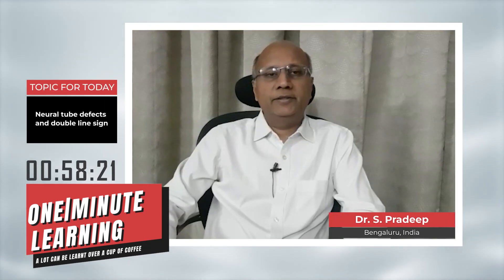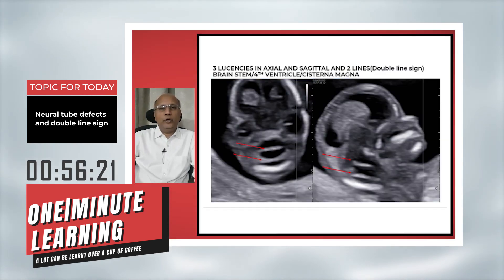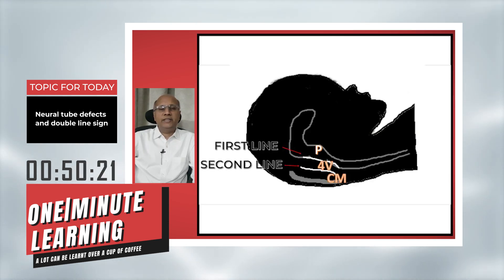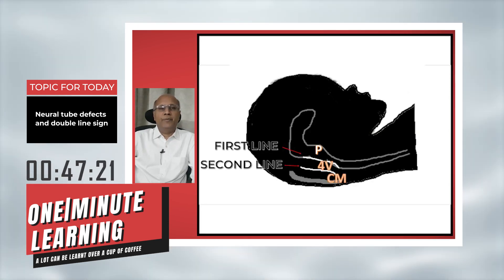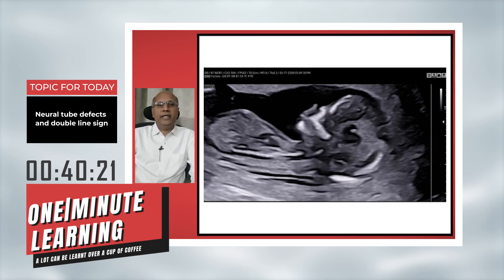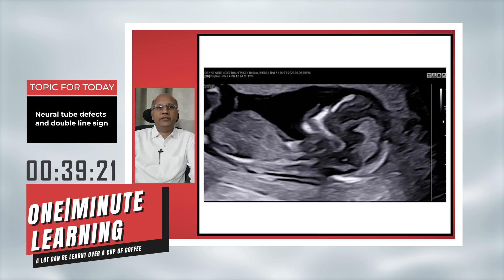The double line sign is the demonstration of two echogenic lines, as shown by the red arrows, which separate three lucencies. The three lucencies are the pons, fourth ventricle, and cisterna magna. We can observe this in the axial scan as well, as shown by this diagrammatic representation. Here is the mid-sagittal plane showing the two lines separating the three lucencies — the double line sign.